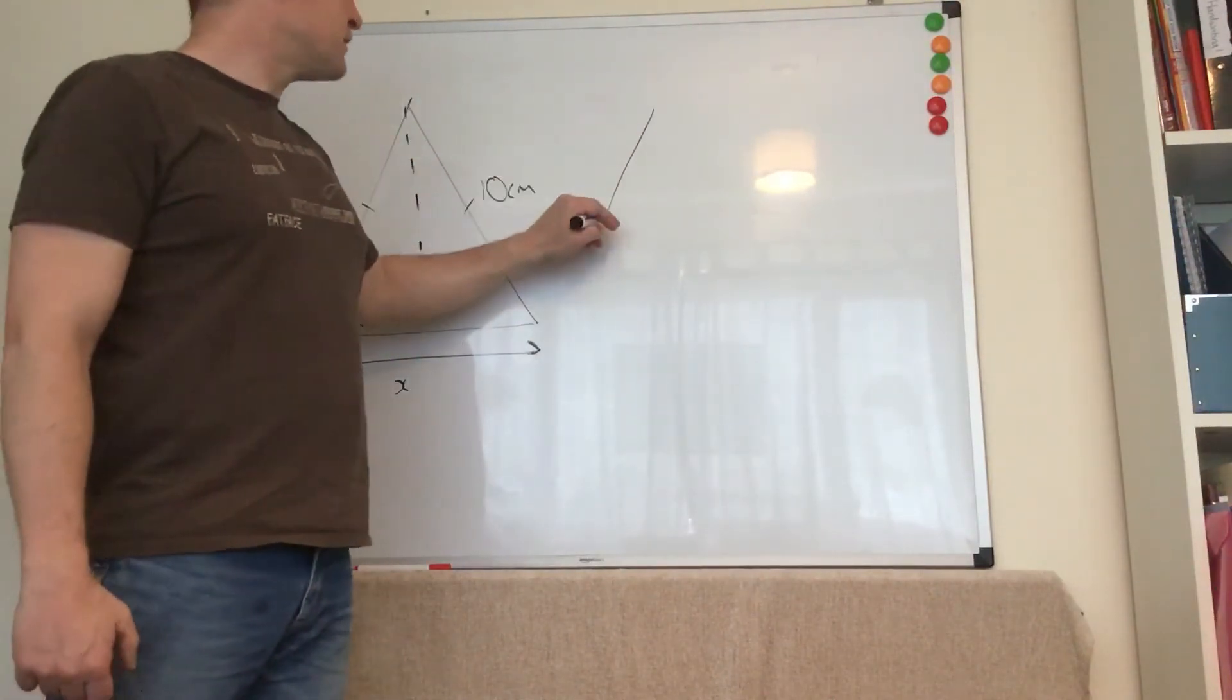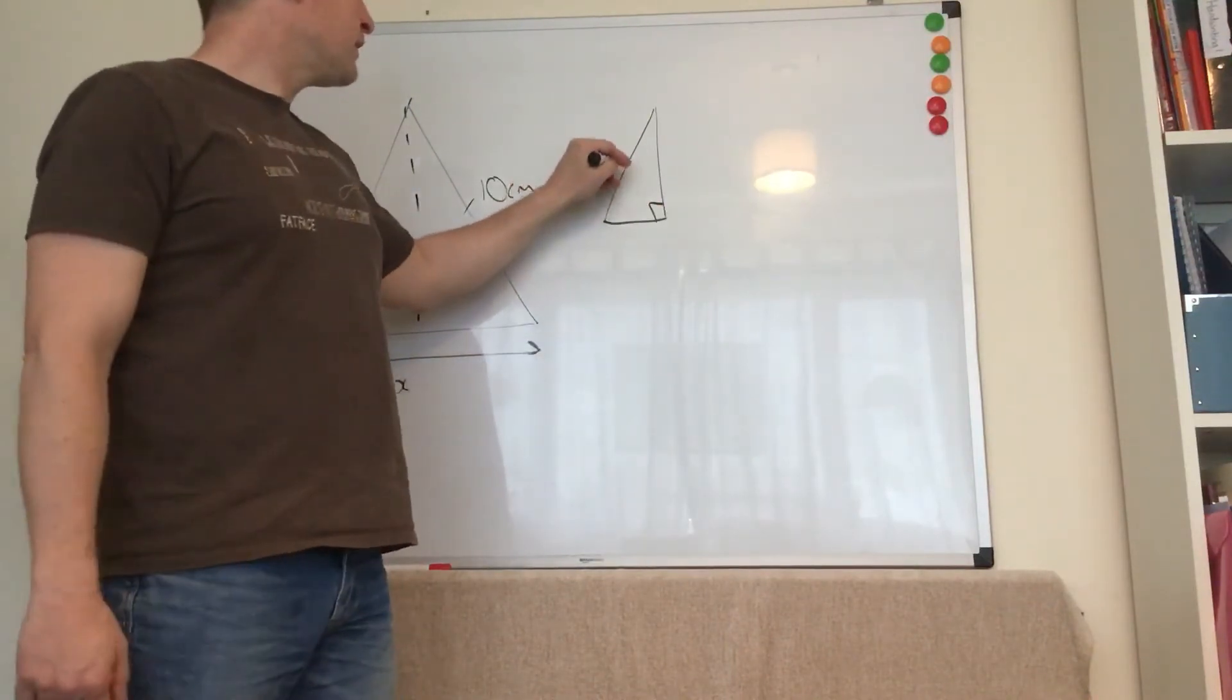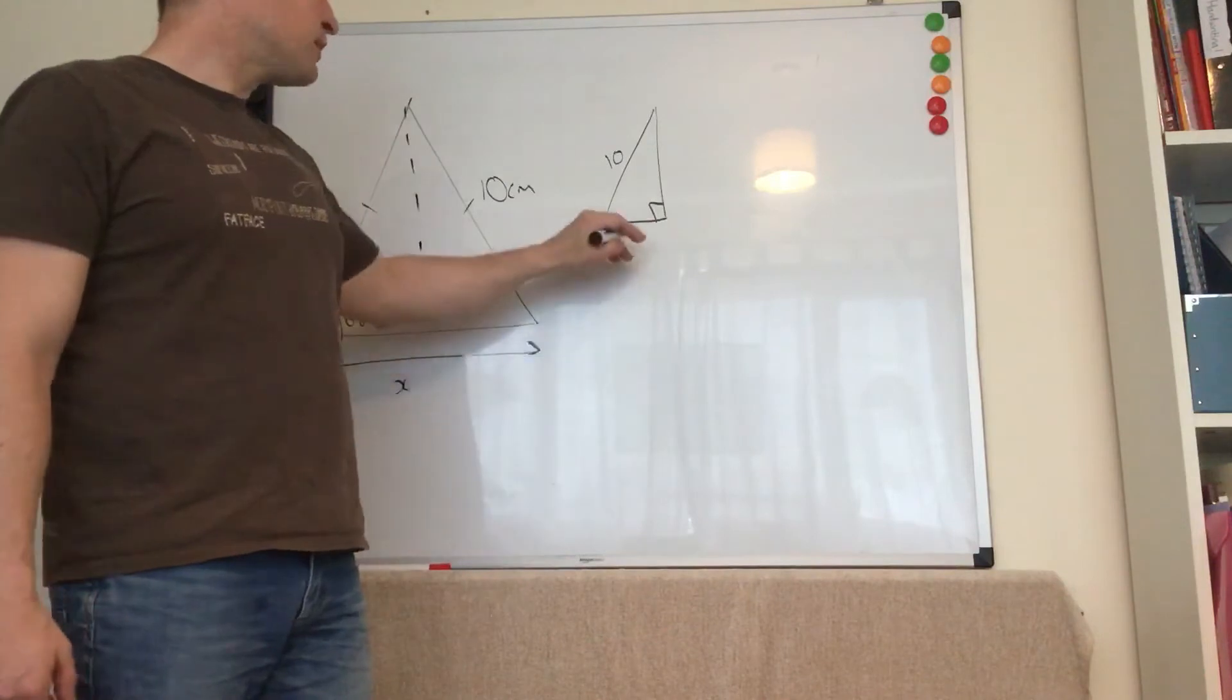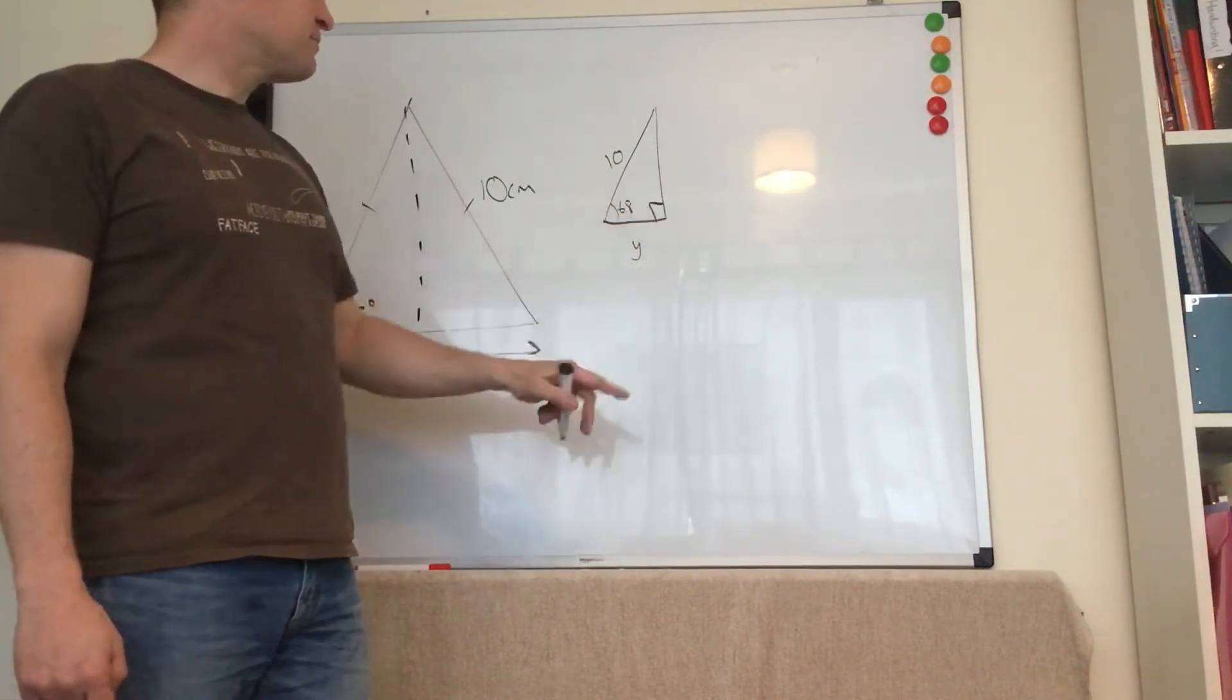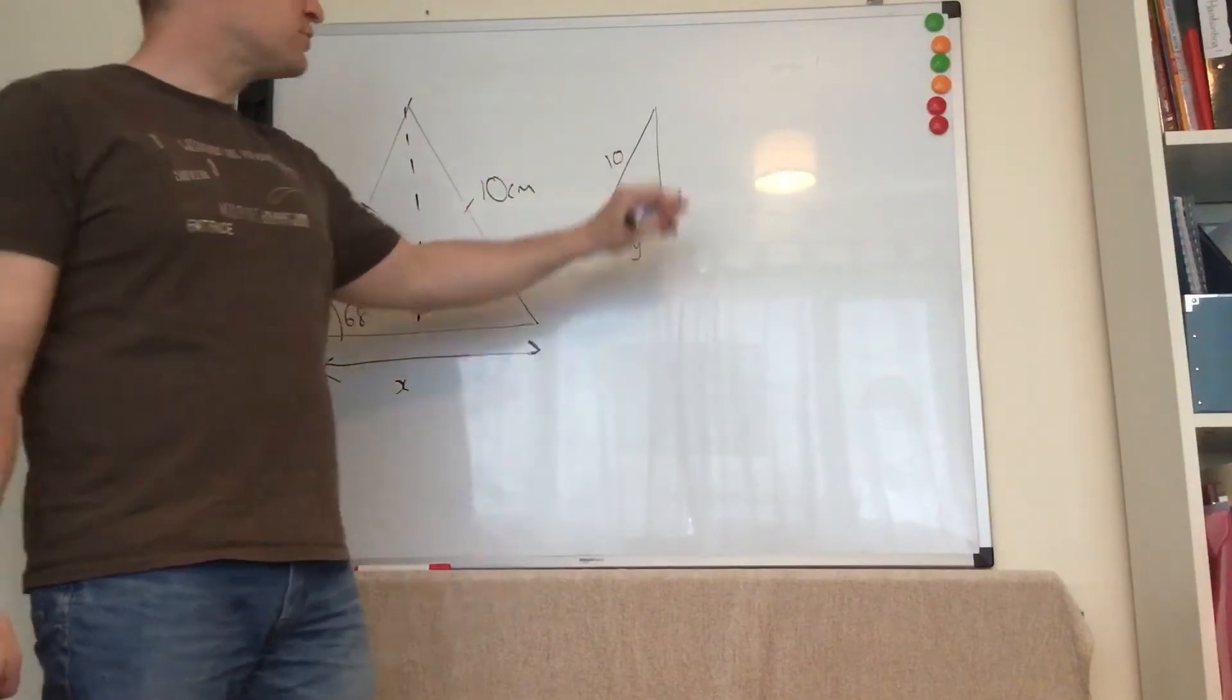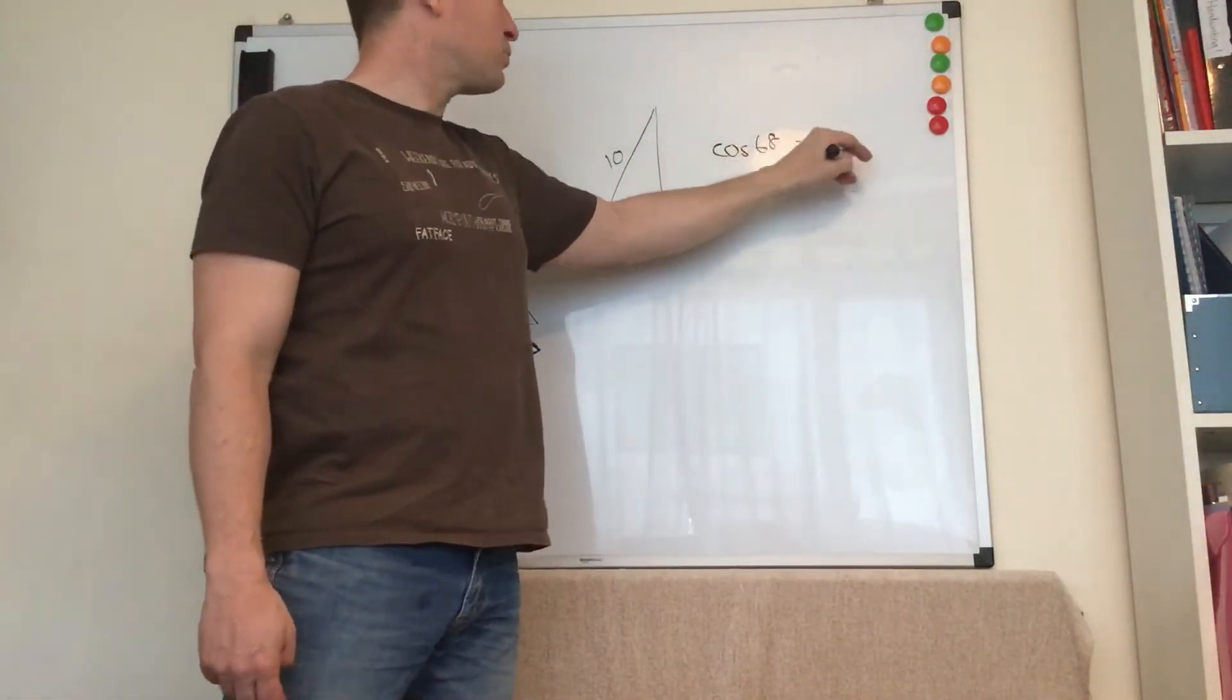What I did is took half of that triangle to make a right angle triangle. That's 10. That's going to be x over 2. I'll just call it y. That's 68. So I've got adjacent hypotenuse. So I want cos 68 equals y over 10.